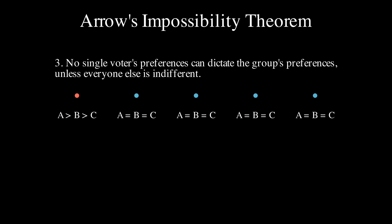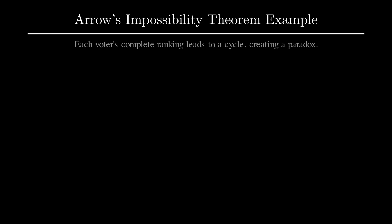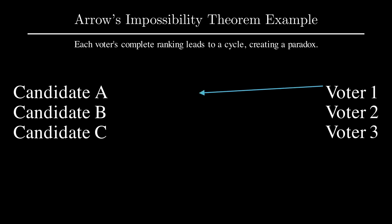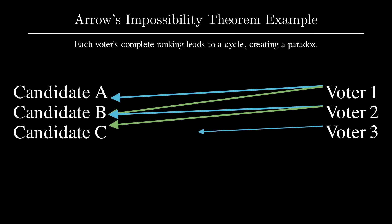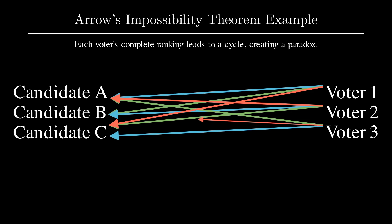The disappointment here lies in realizing that every ranked voting system that satisfies Arrow's conditions must compromise some aspect of what we consider fair. This theorem challenges the pursuit of a perfect voting system and forces us to reconsider what we deem fair in collective decision-making.